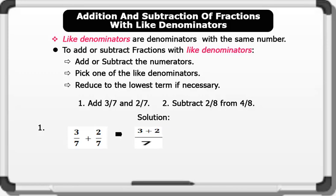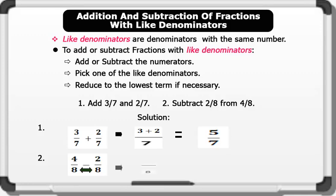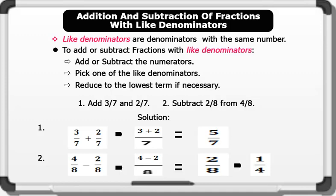3 plus 2 gives us 5 over 7. For example 2: 4 over 8 minus 2 over 8 — since the denominators, which is 8, are the same, we pick one 8, then we subtract the numerators: 4 minus 2 gives us 2 over 8. Reducing to the lowest term by dividing through by 2 equals 1 over 4. That's brilliant!